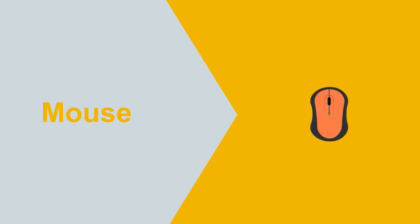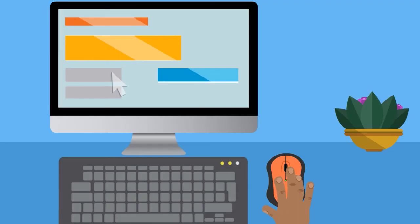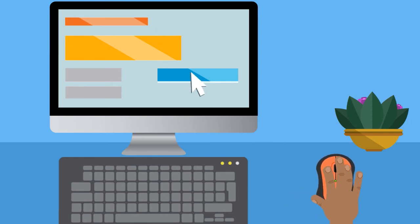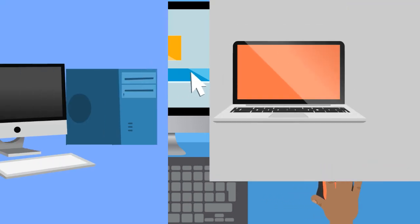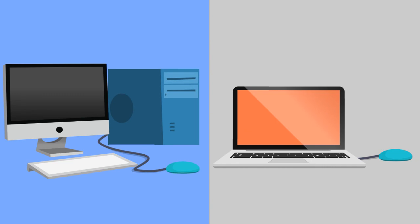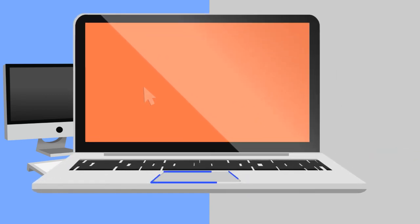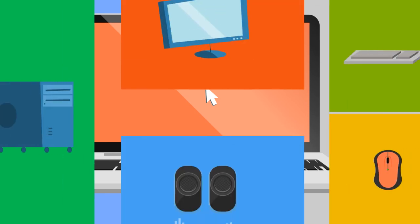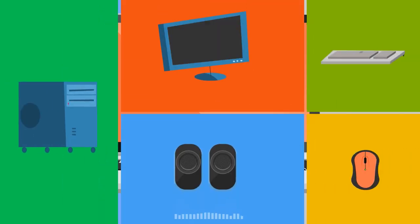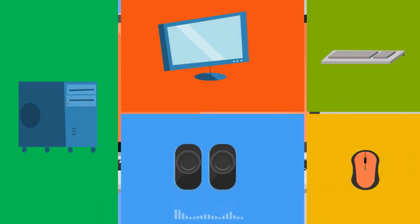The mouse is an important device used to interact with items displayed on the screen. When you move the mouse, a pointer on the screen also moves, allowing you to operate the computer. You can plug a physical mouse into your computer or use the touchpad that is built into some computers and provides the same function. All of these parts may not look the same for every type of computer, but they still provide the same functions.